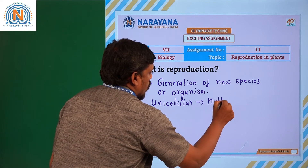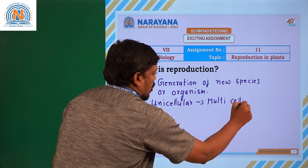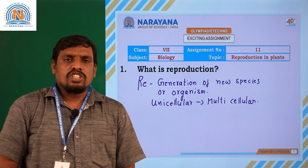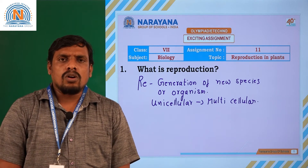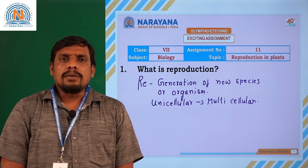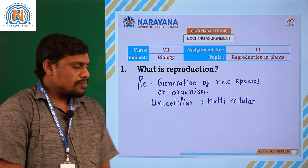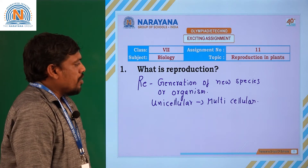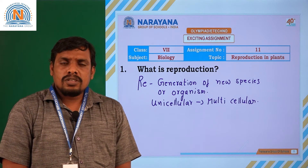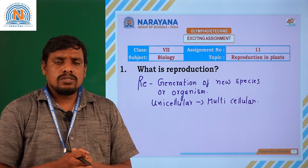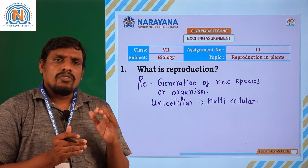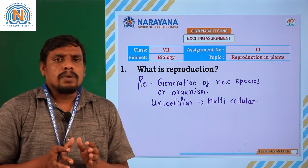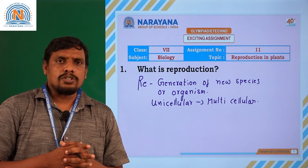Right from unicellular organisms to multicellular organisms, the process of reproduction is a common process which helps in the formation of new species or living organisms. If you take amoeba, which is a unicellular organism, it reproduces by a special mode of reproduction. Whereas if you take humans, we have specialized reproductive organs. Reproduction is a biological process that involves the formation of new species.